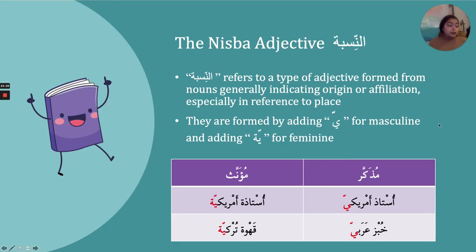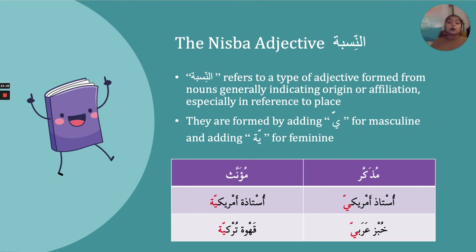Now let's move on to the next major topic on the same page, صفحة ستة: النسبة. What is النسبة? The nisba adjective is a type of adjective formed from a noun — usually a noun of place — indicating origin or affiliation. The easiest English examples are words like American, Canadian, French, German, Lebanese, African, Australian — words that tell you where a person is from.